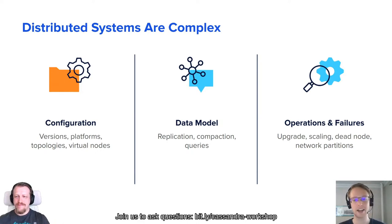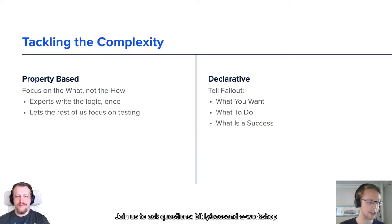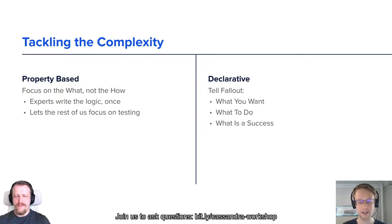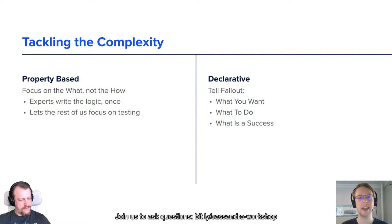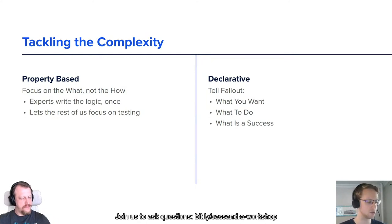How does Fallout tackle this complexity? It happens in two ways. There's a question about how you actually search through this space. Broadly speaking, Fallout takes two approaches to making the complexity of testing distributed systems more tractable and easier to deal with. By describing distributed systems in a declarative manner, you never have to worry about the mechanics of how to create or operate the distributed system. There's no worrying about fat-fingering in the middle of a process. It's very amenable to being automated and finding its way into CI pipelines.